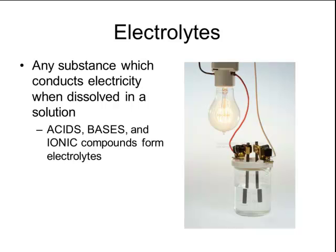In the picture to the right, there's a beaker containing an electrolyte with two electrodes going down into the solution. Because there are positive and negative particles floating around in that solution, electricity can be conducted through those electrodes, making the lightbulb light up. That is what makes the liquid an electrolyte.